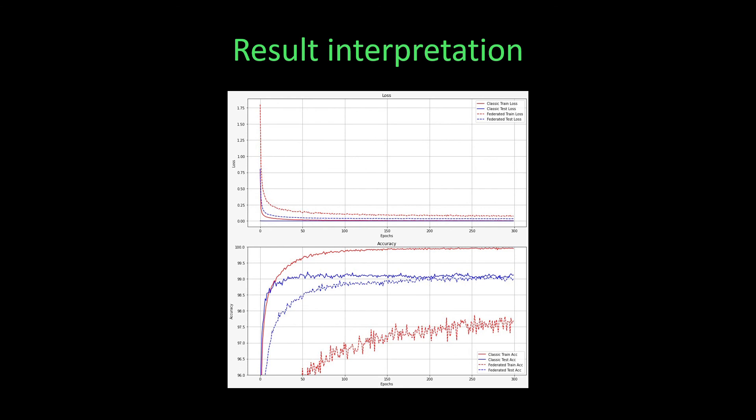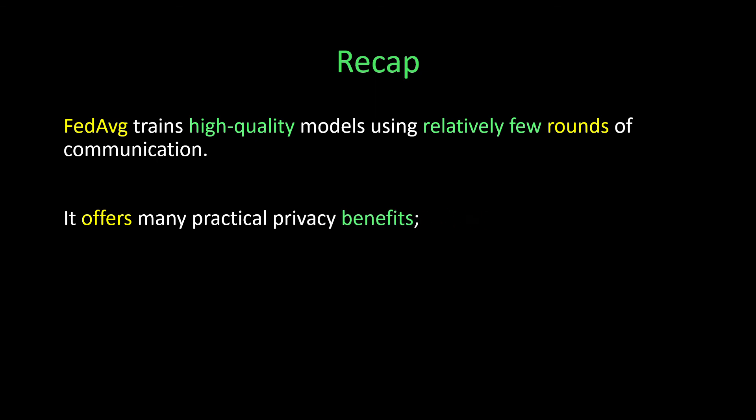To sum up, federated averaging trains high-quality models using relatively few rounds of communication. It offers many practical privacy benefits such as differential privacy and secure multi-party computation. Thank you.